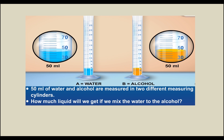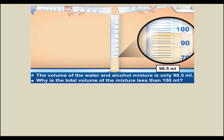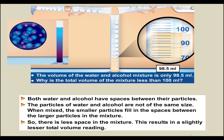50 ml of water and alcohol are measured in two different measuring cylinders. How much liquid will we get if we mix the water with the alcohol? The volume of the water and alcohol mixture is only 98.5 ml. This is because both water and alcohol have spaces between their particles. The particles of water and alcohol are not of the same size. When mixed, the smaller particles fill in the spaces between the larger particles, so there is less space in the mixture, resulting in a slightly lesser total volume reading.